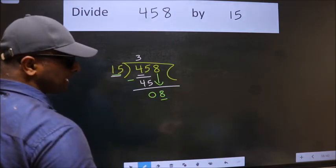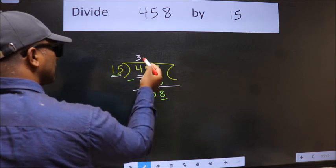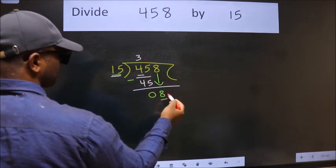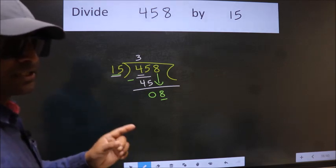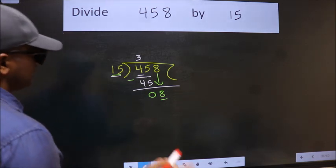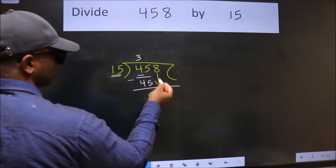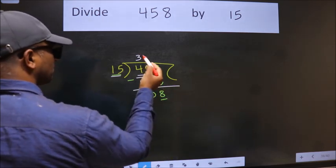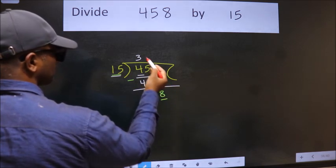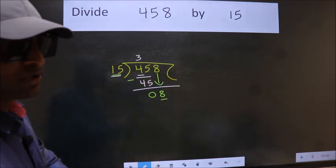So what many do is they directly put dot, take 0, which is wrong. Why is it wrong? Because just now you brought this number down, and in the same step you want to put dot, take 0, which is wrong.